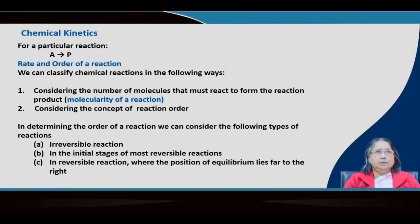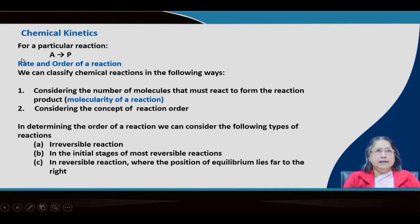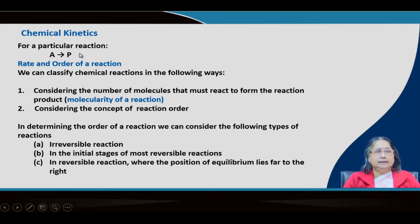To introduce chemical kinetics, let us start with a very simple example. Say for example, A is a single reactant giving a single product P. Rate and order of a reaction are very important. We can classify chemical reactions in two different ways.